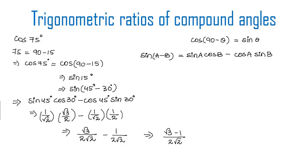So hence the value of cos 75° is (√3 - 1) / 2√2. This was the proof of the formula sin(a - b) = sin a cos b minus cos a sin b. Hope you understood the concept. Do like and subscribe to vdchacademy.com.